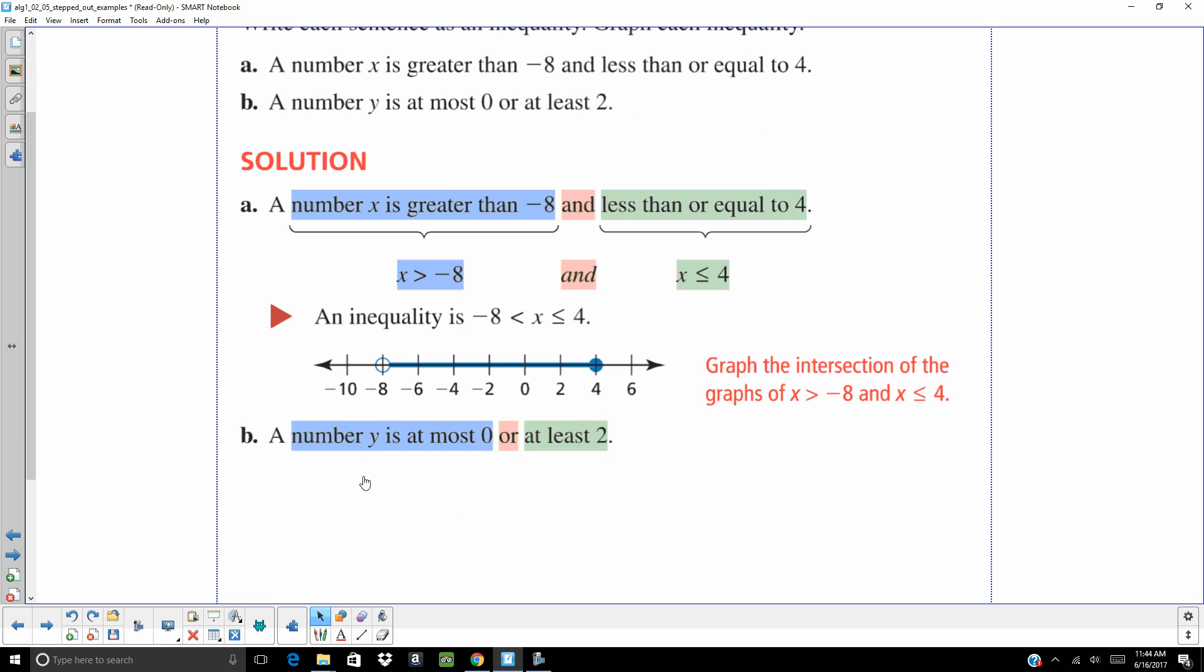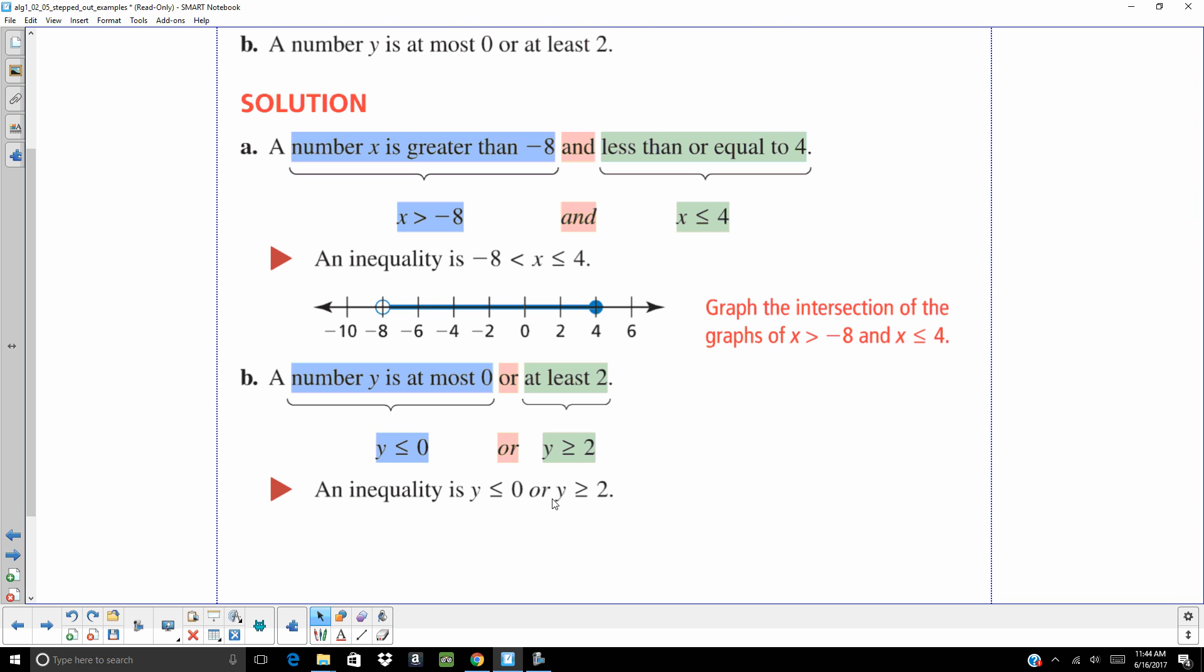So a number y is at most 0. So y is less than or equal to 0. Or at least 2. At least it can be bigger. So it would be greater than or equal to 2. So on this one, we've got that or. And we need to make sure we write or down.